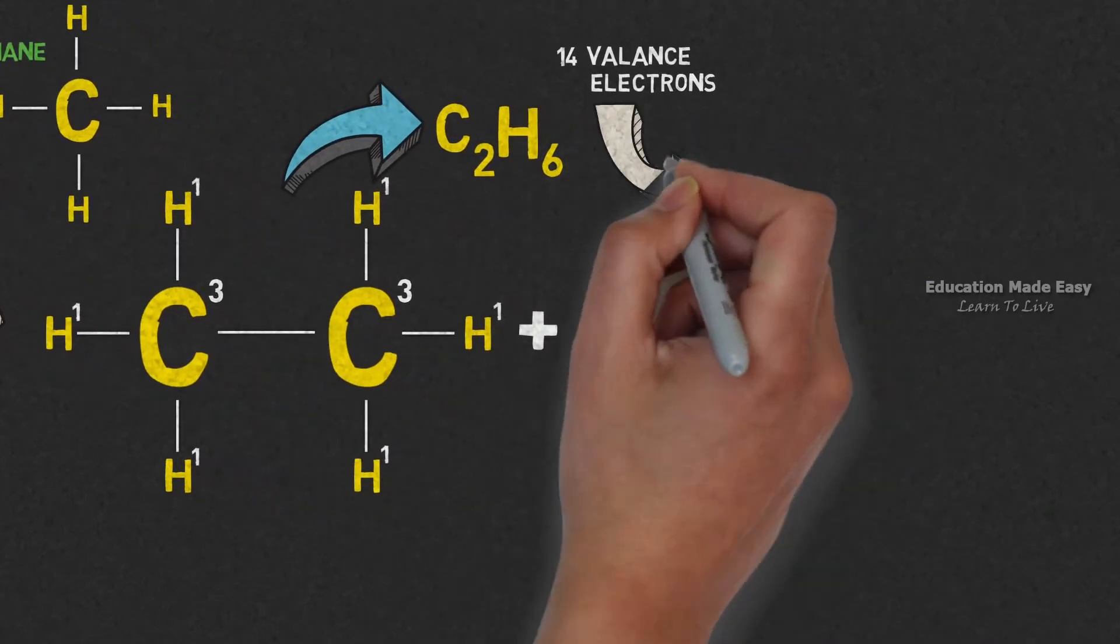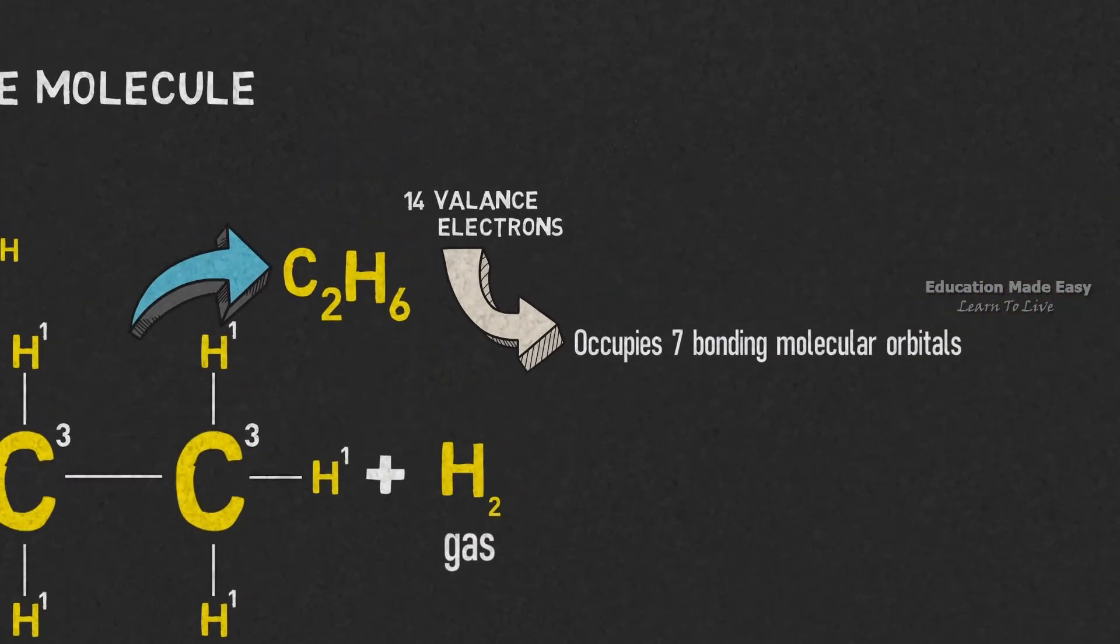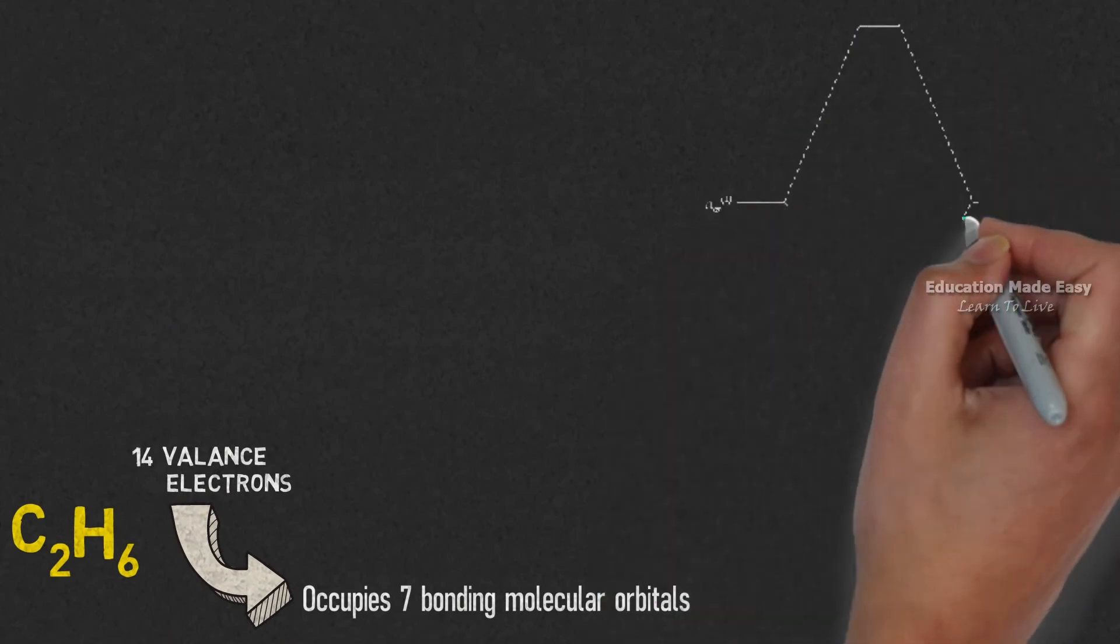These 14 valence electrons occupy 7 bonding molecular orbitals. Let us draw the molecular energy diagram of ethane.